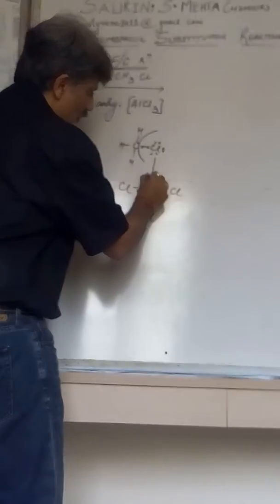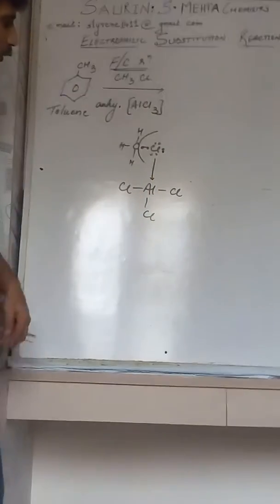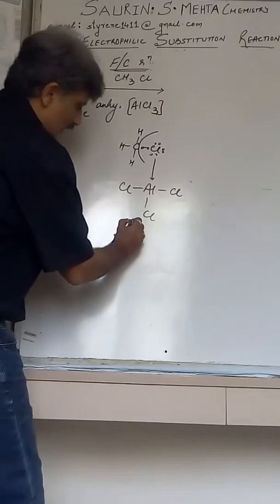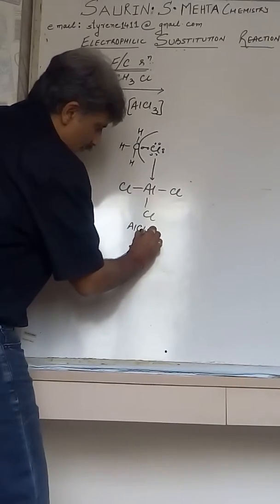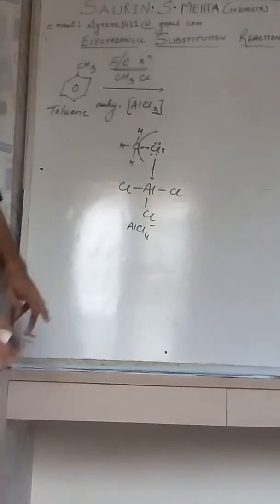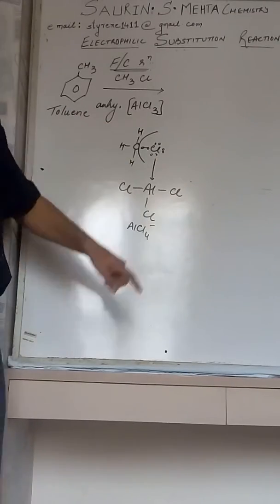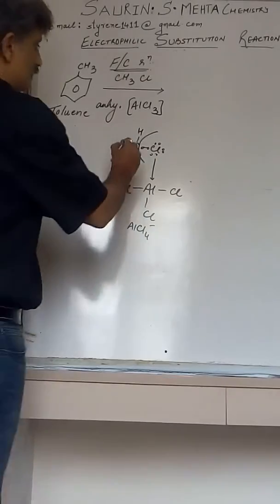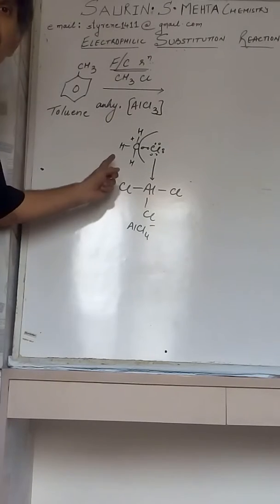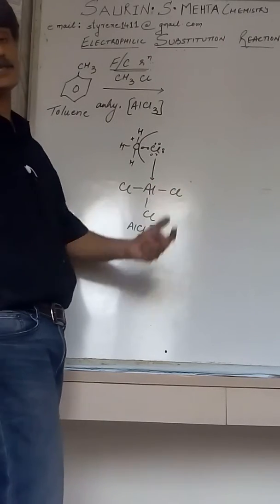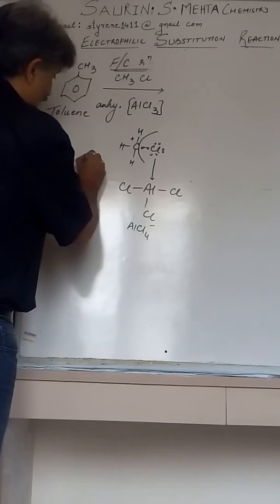And that prompts one Cl from methyl chloride to bond with AlCl3. As a result that Cl comes along with the lone pair and forms a bond with AlCl3, giving you AlCl4 minus. On the other hand, the methyl group which is bonded to Cl attains the plus sign. This is your methylenium ion or you can consider it as an electrophile.